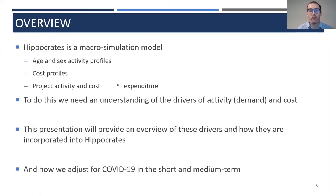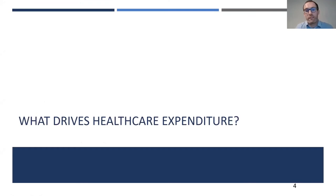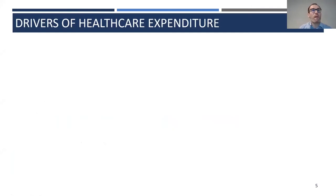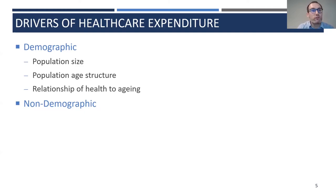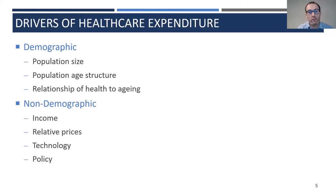This presentation provides an overview of these drivers and how they are incorporated into HIPPOCRATES, and also, given its relevance, how we adjust for the impact of COVID-19 in both the short and medium term. Our drivers of health and hospital care expenditure can be neatly split into demographic and non-demographic components. Demographic components include population size — more people means more demand and expenditure — and the population age structure, since older populations tend to spend more on healthcare.